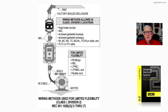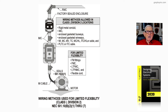— notice rigid metal conduit, IMC, enclosed gasket busways under certain conditions, and enclosed gasket wireways. Then look at this laundry list — you could use MI cable,